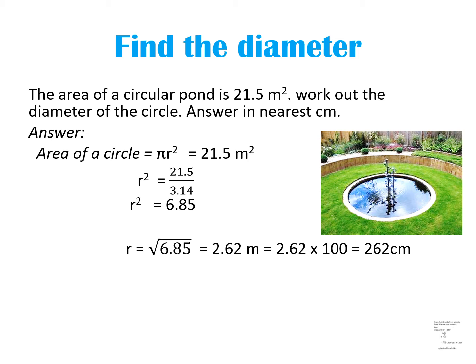Convert this value from meters to centimeters. From meter to centimeter we have to multiply, because we are going from a bigger unit to a smaller unit. 1 meter is equal to 100 centimeters, so we multiply 2.62 by 100, which gives 262 centimeters. The r value is 2.62 meters, which equals 262 centimeters.